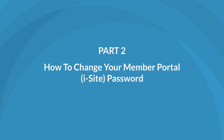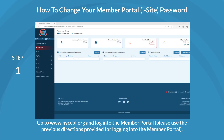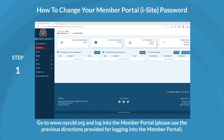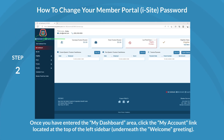Next, we'll learn how to change your iSight password. First, go to www.nyccbf.org and log into the Member Portal. You can use the previous directions provided for logging into the Member Portal. Once you have entered the My Dashboard area, click the My Account link located at the top of the left sidebar, underneath the Welcome Greeting.